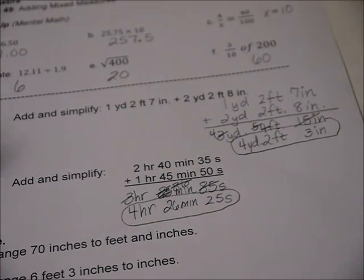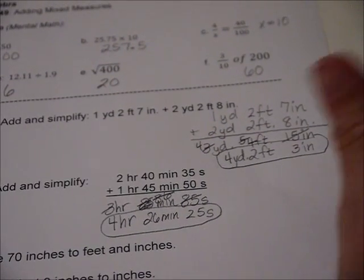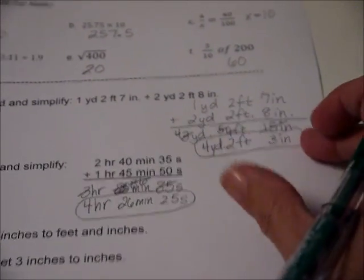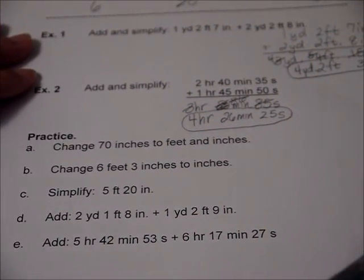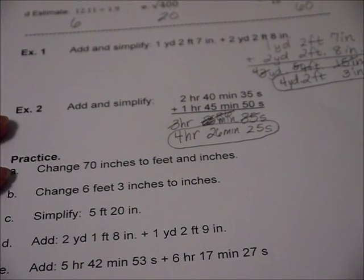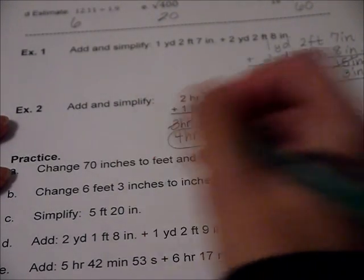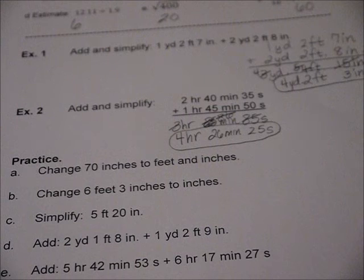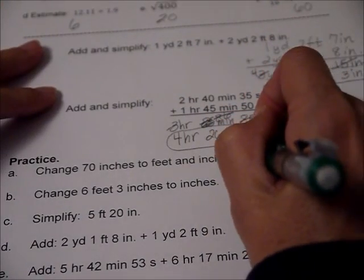Okay, so that's it. The practice is pretty simple. You can use the back if you need some extra workspace, but it shouldn't take too much work. You may begin. Alright, 70 inches into feet and inches. Well, let's figure out how many feet are in 70 inches. I know my 12s. I know that 5 times 12 is 60 and 6 times 12 is 72, so it looks like we've got 5 feet.